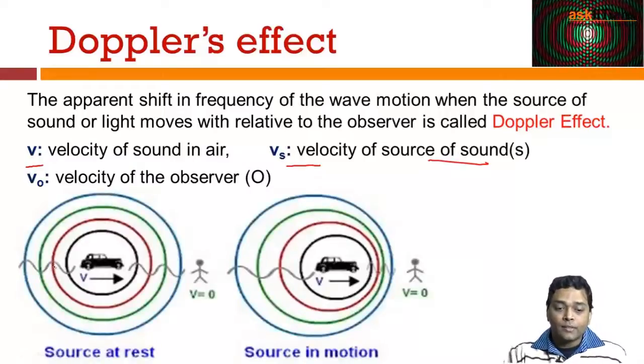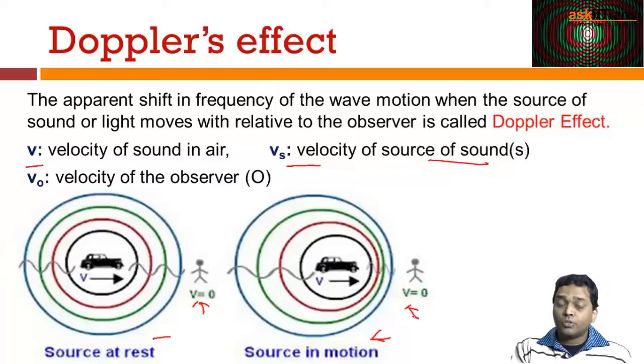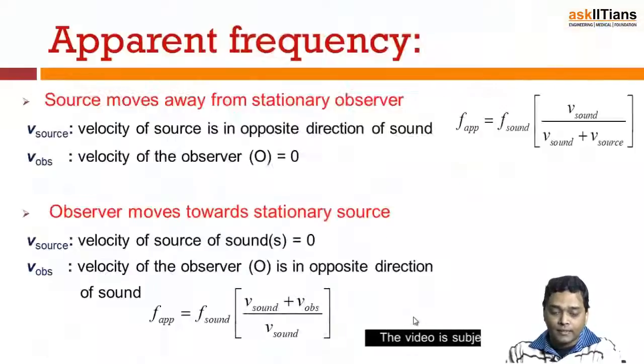There can be multiple cases when the source is at rest. You can have source in motion. You can have the observer at rest in both the cases. Then you can have observer in motion either towards the source or away from the source. So effectively there are multiple cases that we are going to consider in this. Let's try to take it case by case.